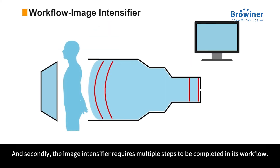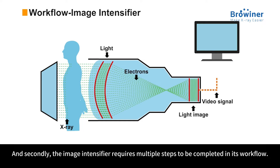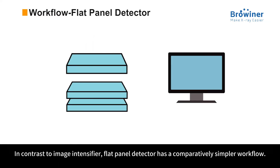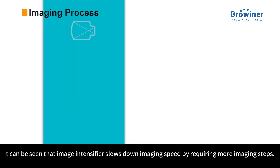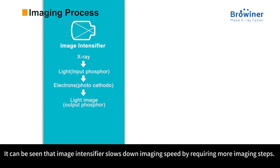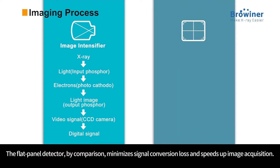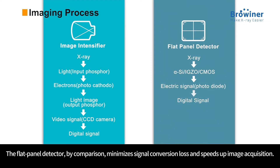Secondly, the image intensifier requires multiple steps to be completed in its workflow, whereas the flat panel detector has a comparatively simpler workflow. The image intensifier slows down imaging speed by requiring more imaging steps, while the flat panel detector minimizes signal conversion loss and speeds up image acquisition.